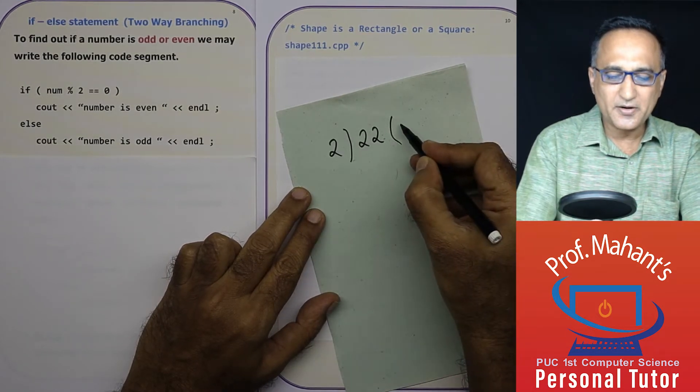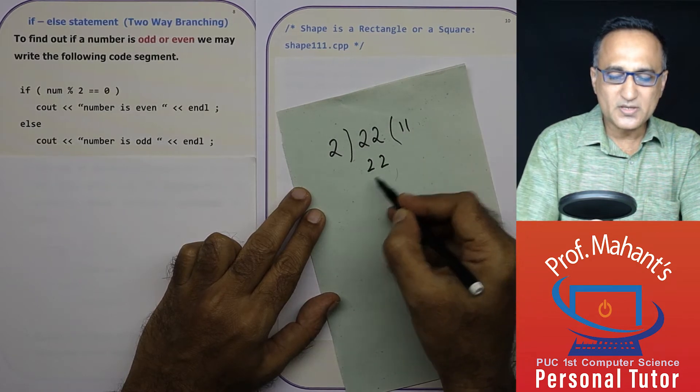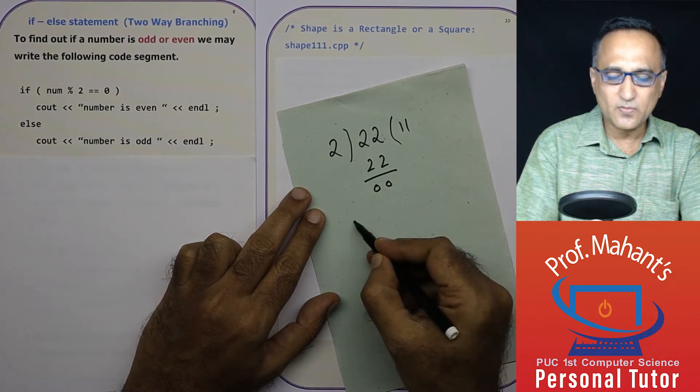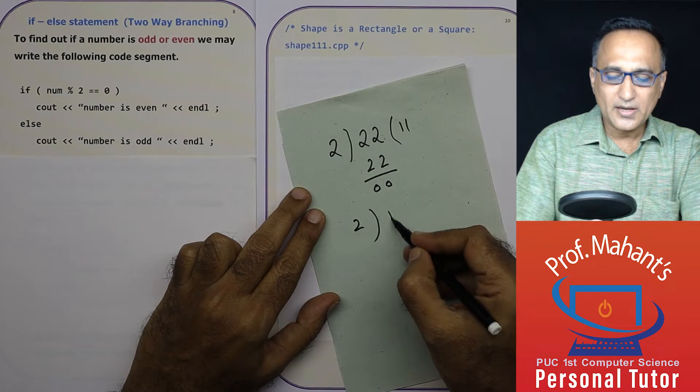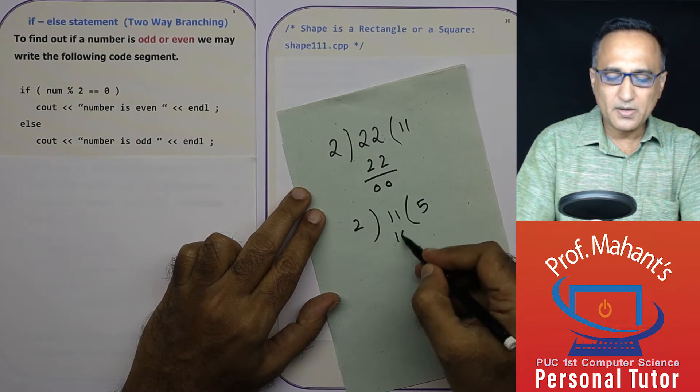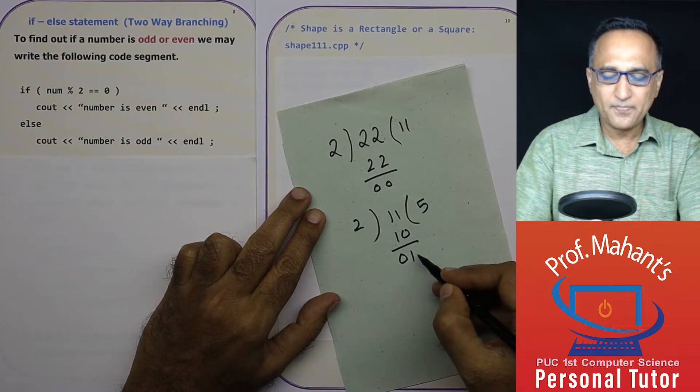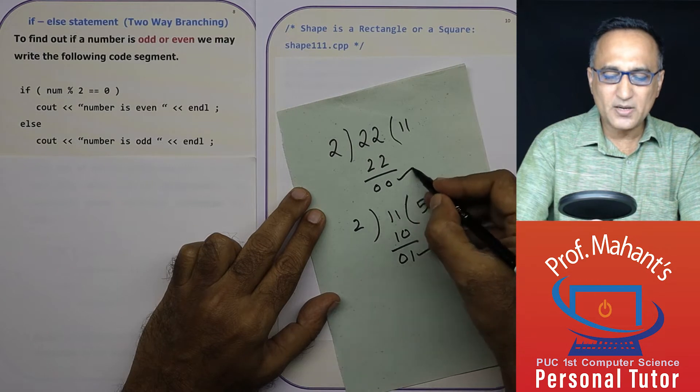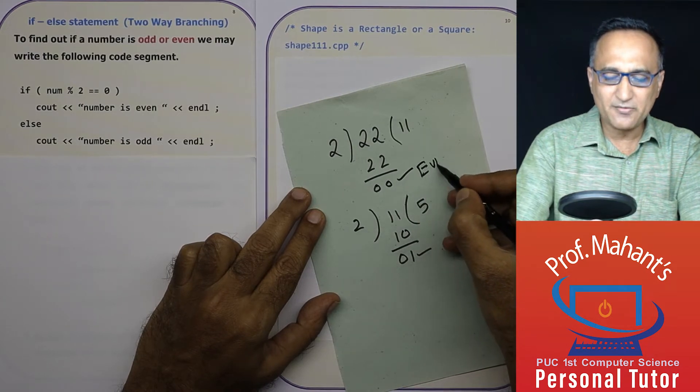So let's say 22 divided by two. The remainder here is zero. 11 divided by two, the remainder happens to be one. So this is an example of an odd number. This is an example of an even number.